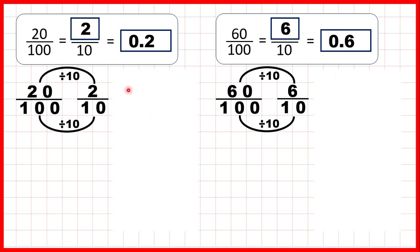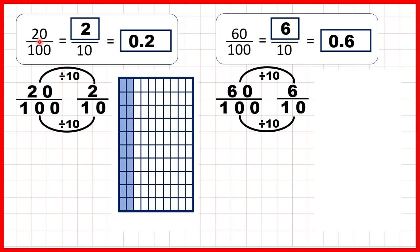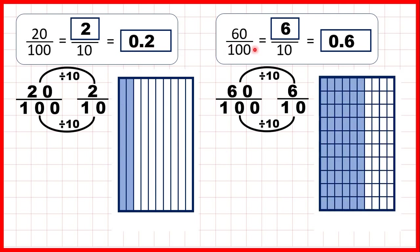So let's show what we've done here. First we had 20 hundredths, but we saw that that was equivalent to 2 tenths, so as a decimal we could write that as 0.2. Then we had 60 hundredths, but we saw that that was equivalent to 6 tenths, so in decimal form it could be written as 0.6.